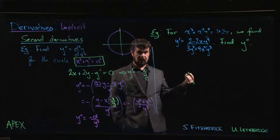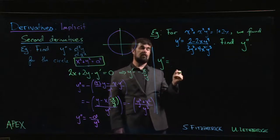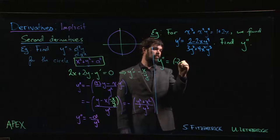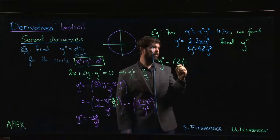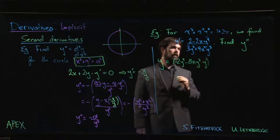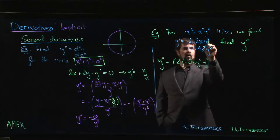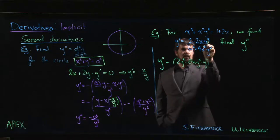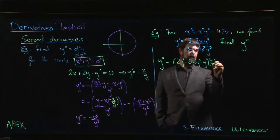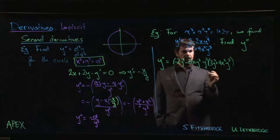So y double prime, well we take the derivative of this quotient. Quotient rule says we take the derivative of the top, so we're going to get minus two y to the fourth minus eight x y cubed times y prime. Right, x times y to the fourth, it's a product, so I have two terms. Derivative of x is just one, derivative of y to the fourth, four comes down, four times two gives me the eight, reduce the power y cubed, but I still have to multiply by the y prime. Now I multiply by the denominator, three y squared plus four x squared y cubed.